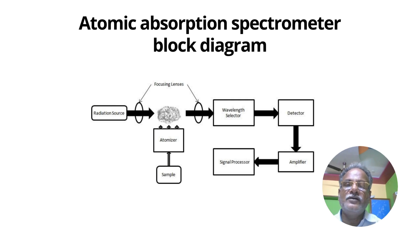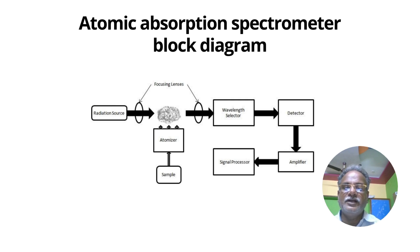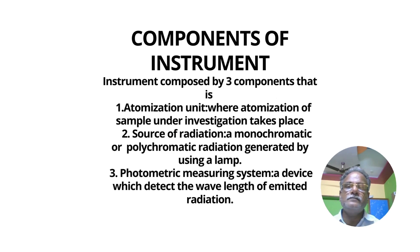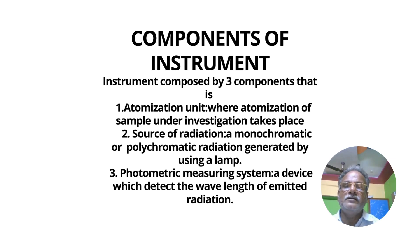Instrumentation of atomic absorption spectrometer. This is a block diagram of the atomic absorption spectrometer. It consists of a source of radiation, a filter, a sample holder provided with an atomizer, and the detector, which is a photoelectric diode. Let us see a brief overview regarding the components of the instrument.